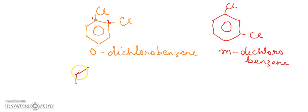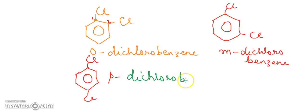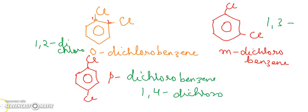If you have the benzene ring with a chlorine atom here and another chlorine atom at position four, the name is para-dichlorobenzene. You can also name these using numbers: one-two-dichlorobenzene, one-three-dichlorobenzene, and one-four-dichlorobenzene.